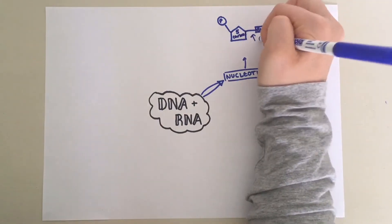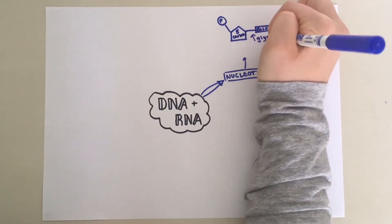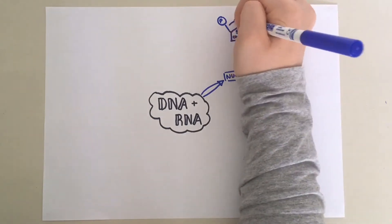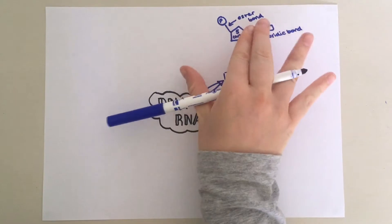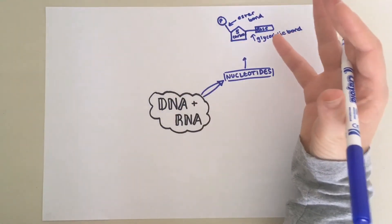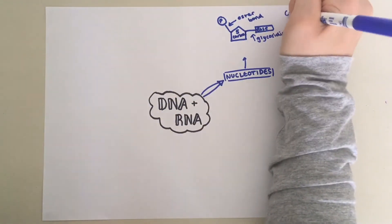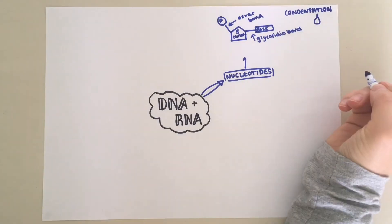This bond here is known as a glycosidic bond. And this bond here is known as an ester bond. These three elements join together via a condensation reaction, where a molecule of water is lost.